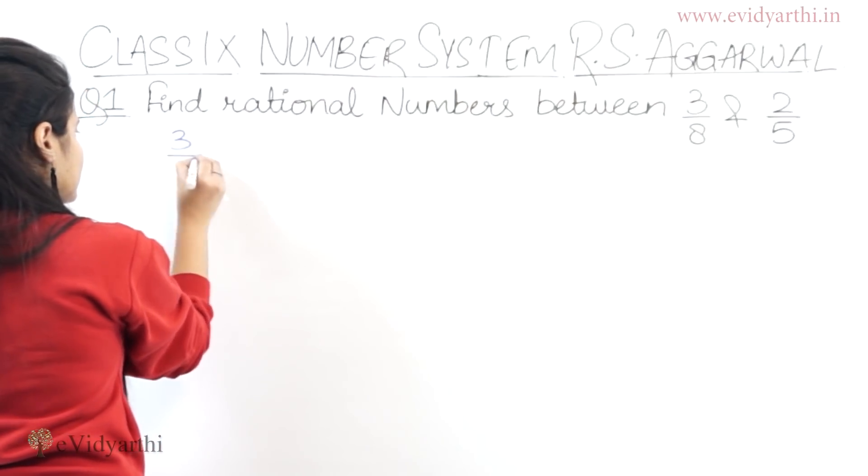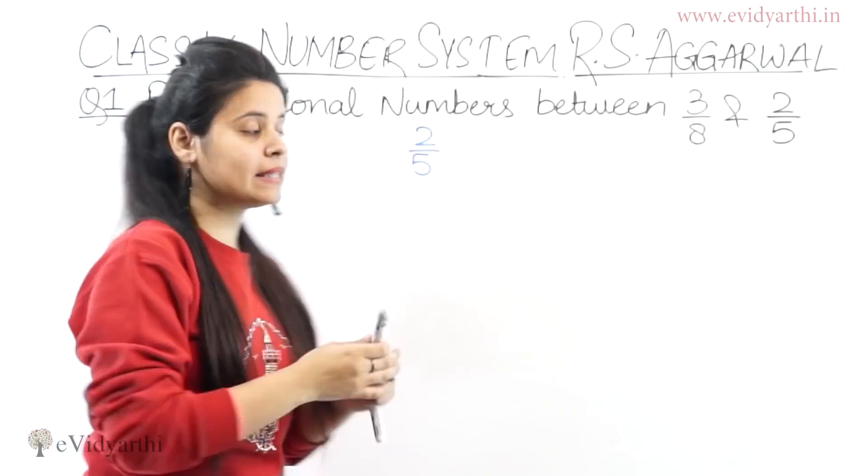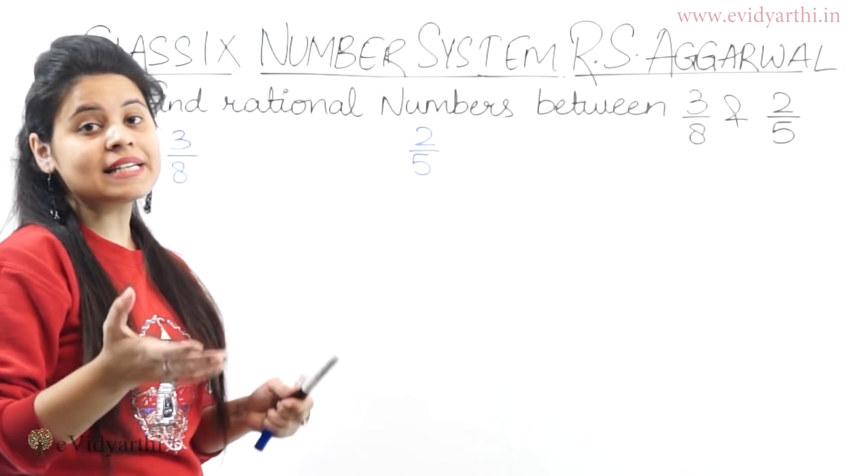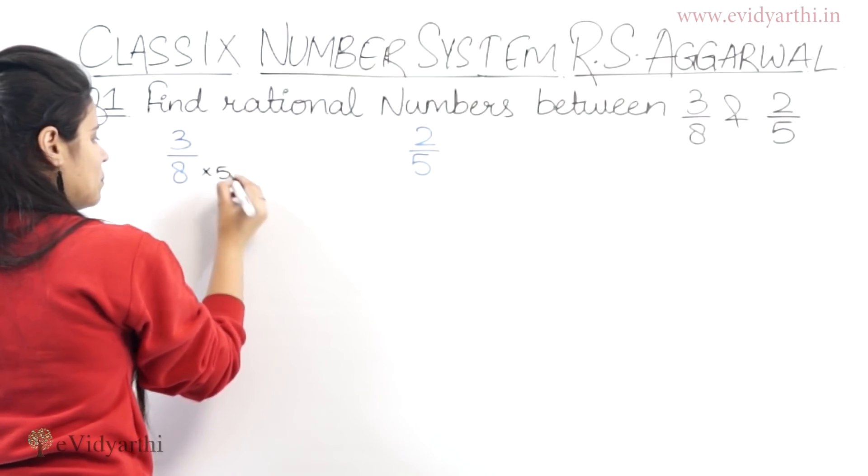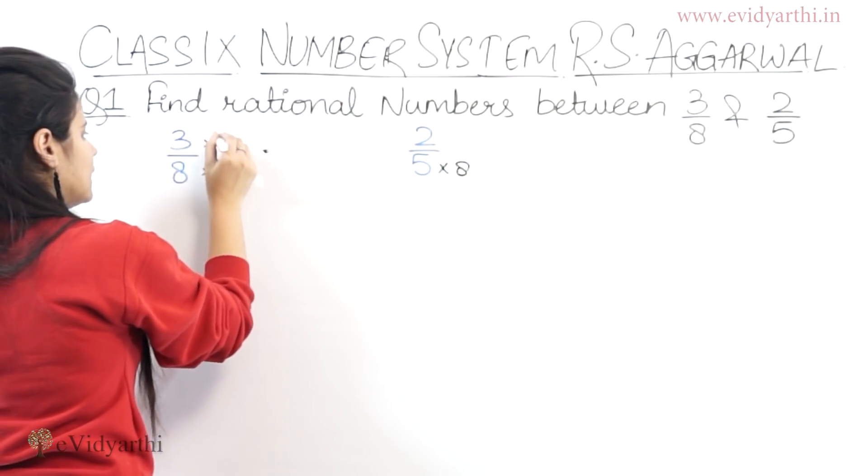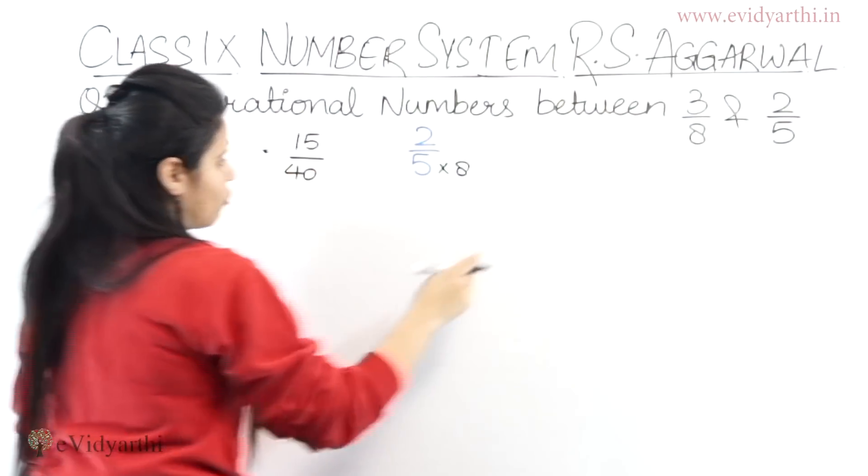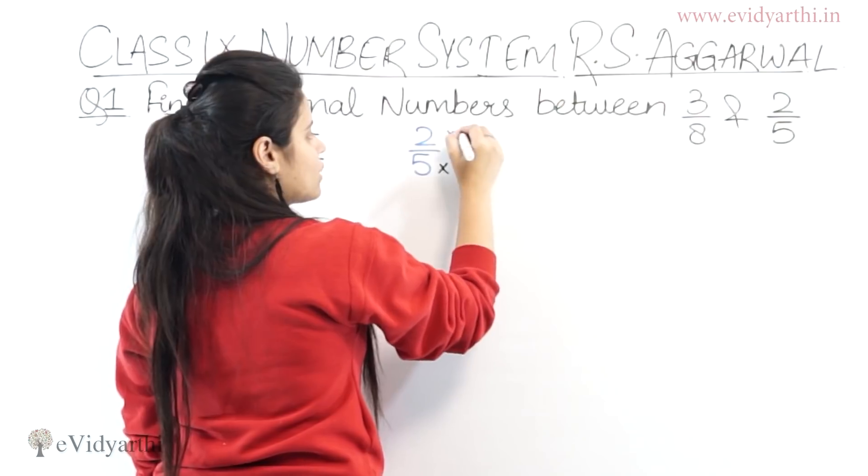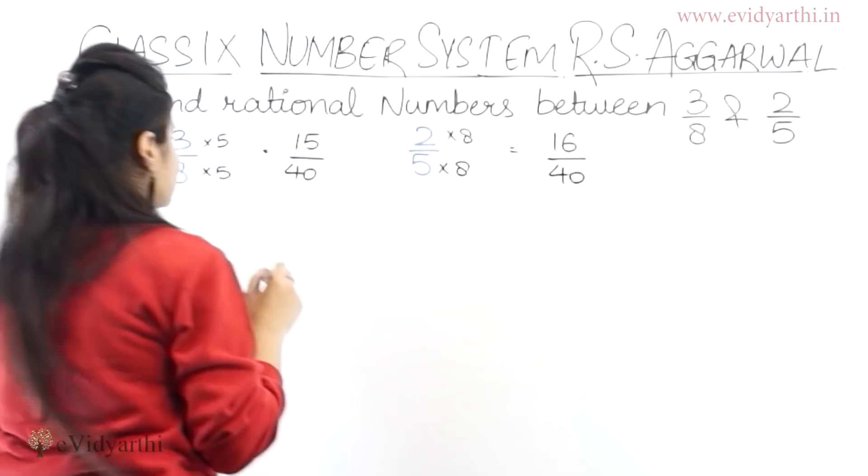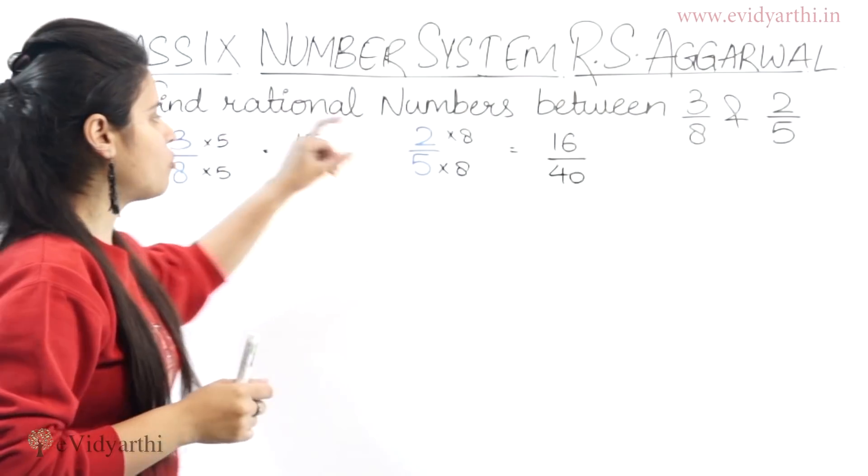So 1 is 3 upon 8, and 8 is 2 upon 5. So when we do this, then what do we do? Denominators are the same. So here, the first common thing I see is 40. So if I multiply 5 by 5, then it will be 40. Similarly, if I multiply 8 by 5, then it will be 40.